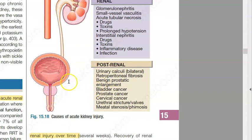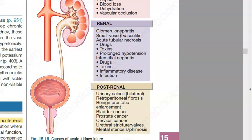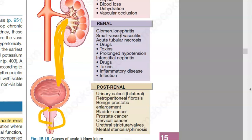Post-renal means after the kidney — from the collecting duct onwards. There could be kidney stones, retroperitoneal fibrosis (since the kidney is a retroperitoneal organ), benign prostatic enlargement, bladder cancer, prostate cancer, cervical cancer (which happens in women), and urethral stricture. All of this leads to obstruction. Obstruction increases pressure in the kidney, so glomerular filtration will not work. Pre-renal and post-renal causes both ultimately affect the kidney.